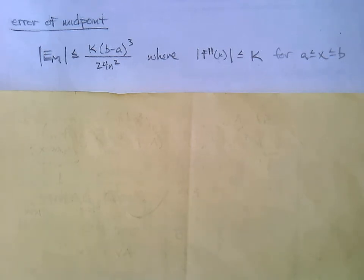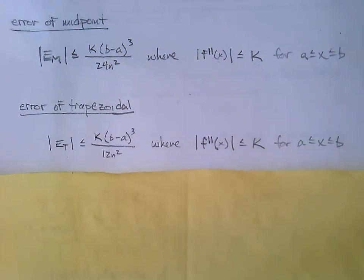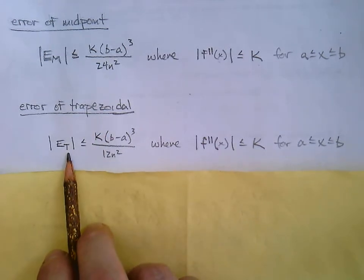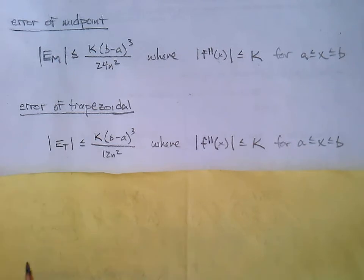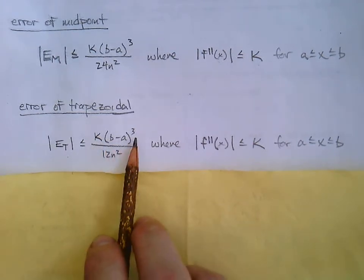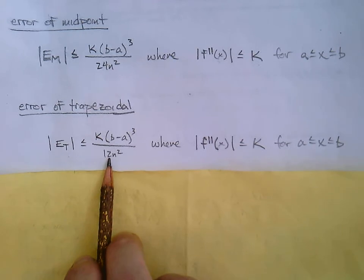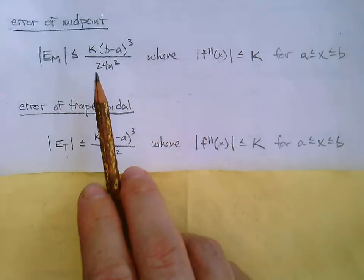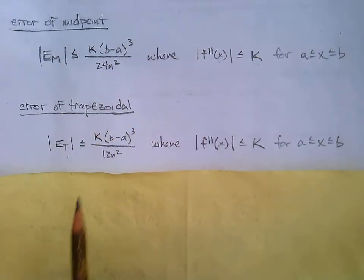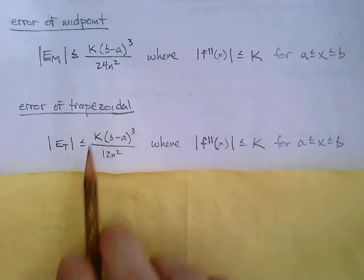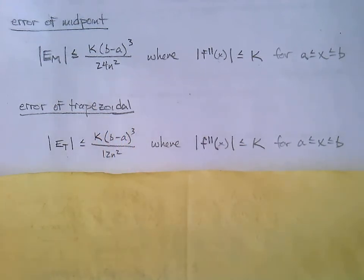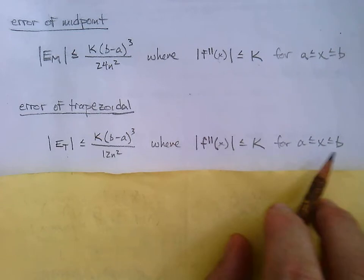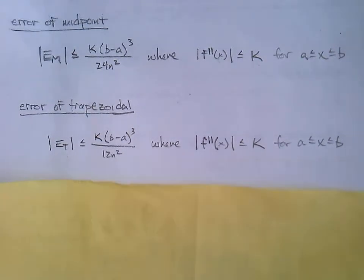Let me also describe the error of the trapezoidal rule and Simpson's rule — they have very similar formulas with a couple of details changed. For the error of the trapezoidal rule, capital E sub T in absolute values, the numerator is identical to the midpoint formula, but the 24 becomes a 12. Since the denominator got smaller, the possibility for error is actually bigger for the trapezoidal rule. All the same stipulations apply for finding K.